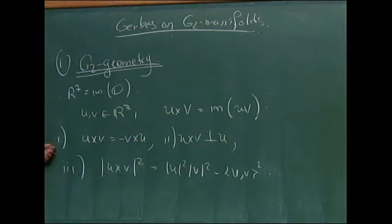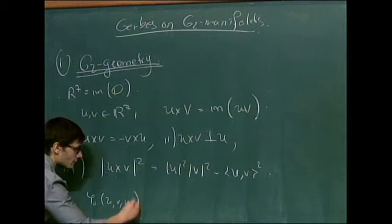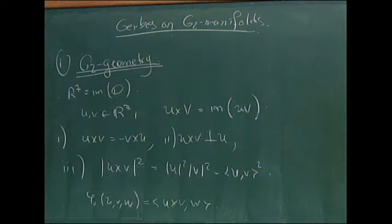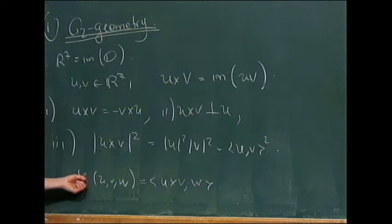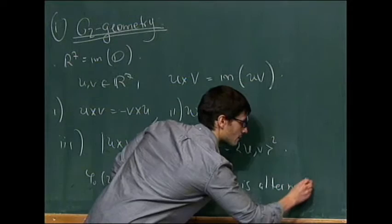This satisfies the three things you would ask a vector cross product to satisfy: it is anti-symmetric; the cross product of U and V is orthogonal to U and also orthogonal to V; and the norm square of U cross V is the area of the parallelogram spanned by them — that is, norm U squared times norm V squared minus the inner product of U and V squared. It follows from conditions one and two that we can define the three-tensor U cross V inner product with W, which is alternating — so it's a three-form in R7.